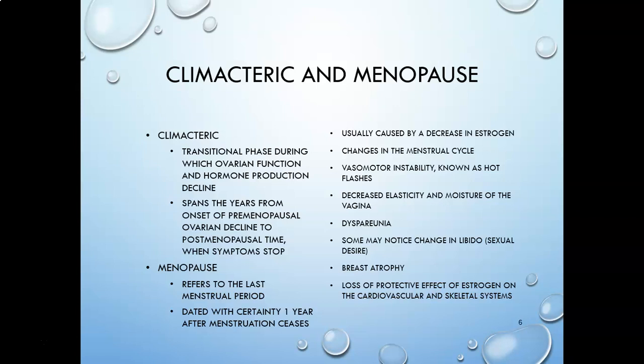Menopause is when it is determined that a woman has reached the end of her reproductive life. To define menopause, there must be 12 consecutive months of zero periods. If a woman goes nine months without periods and then has one, that 12-month cycle starts over again. It has to be 12 consecutive full months of no periods to determine that she is at the end of her reproductive period.